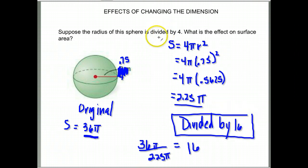So once again, notice dividing the radius by 4 for surface area, it affected it because surface area is squared. It affected it in a squared manner. It was the same as dividing the surface area by 16.